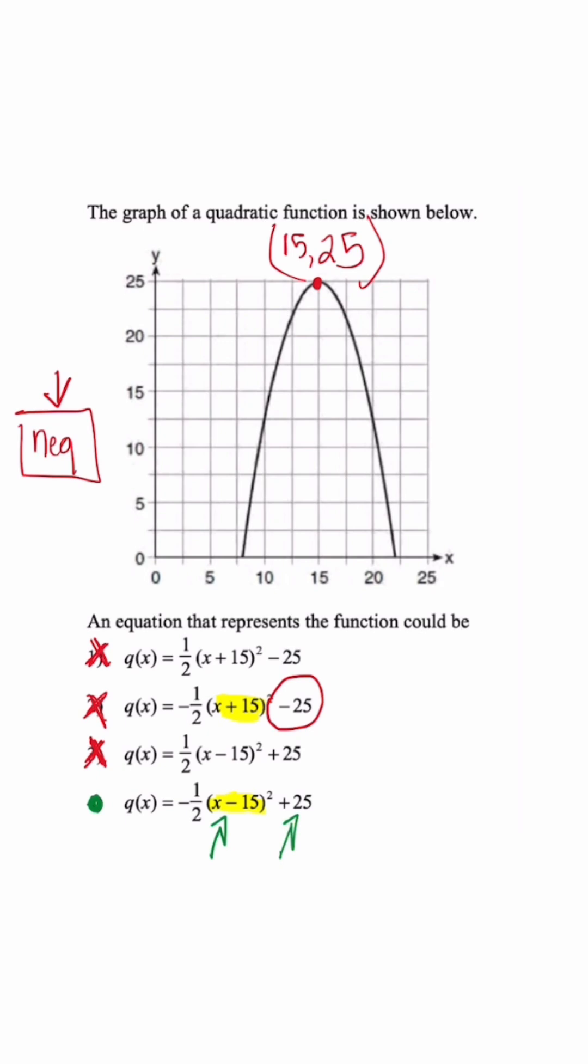Now, the second answer choice, right, let's say we switch back to red. And x plus 15 means that this is going to be a shift to the left 15. So the x-coordinate would be negative 15. And this negative 25 means we go down 25 on the y-axis. So that would be our vertex, which as you see has the opposite sign for both the x and y-coordinate.